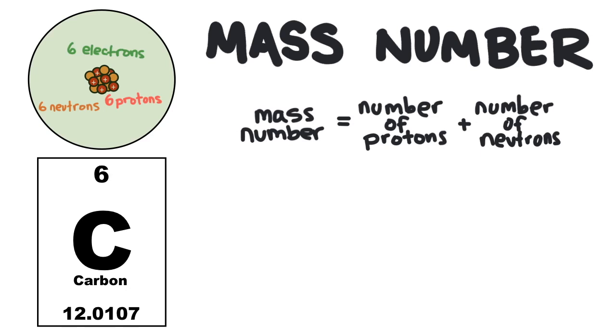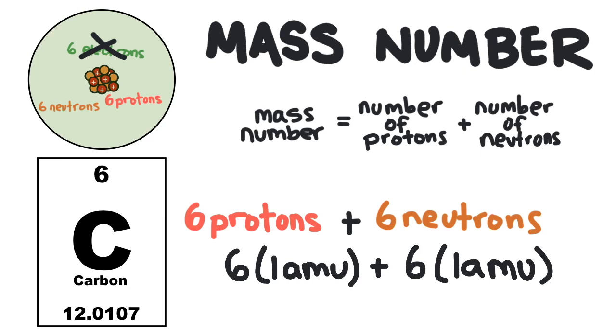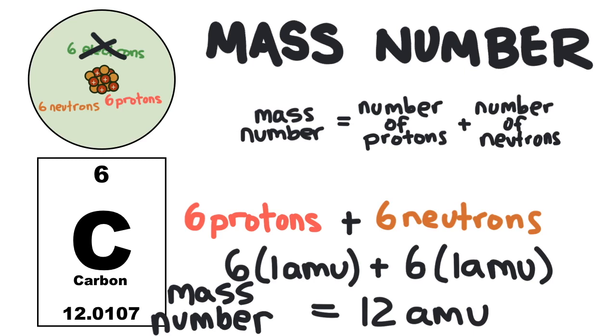Well, we can forget about the electrons because they don't have any mass. And remember that a proton and neutron have the same mass. They each have a mass of one. So we can just add up the protons and the neutrons. Six protons plus six neutrons would give a mass of 12 AMU. So a carbon atom has a mass number of 12 AMU.